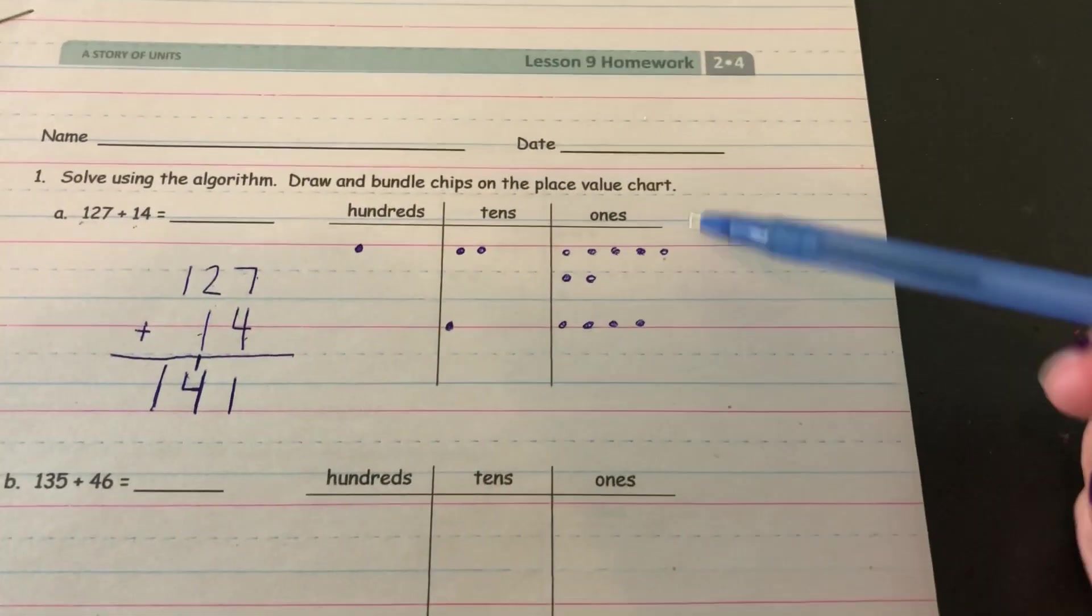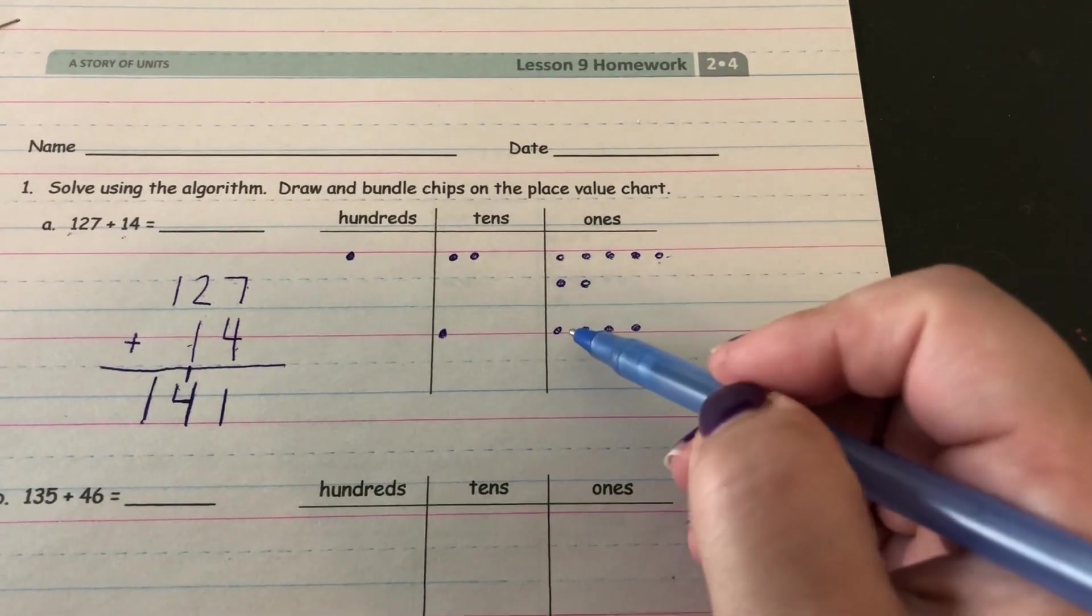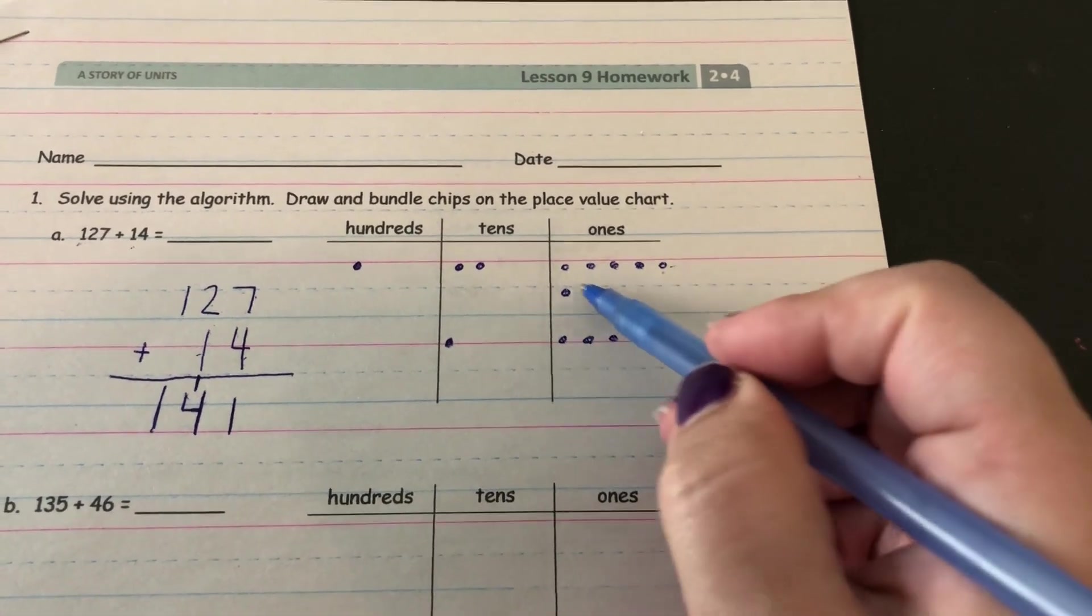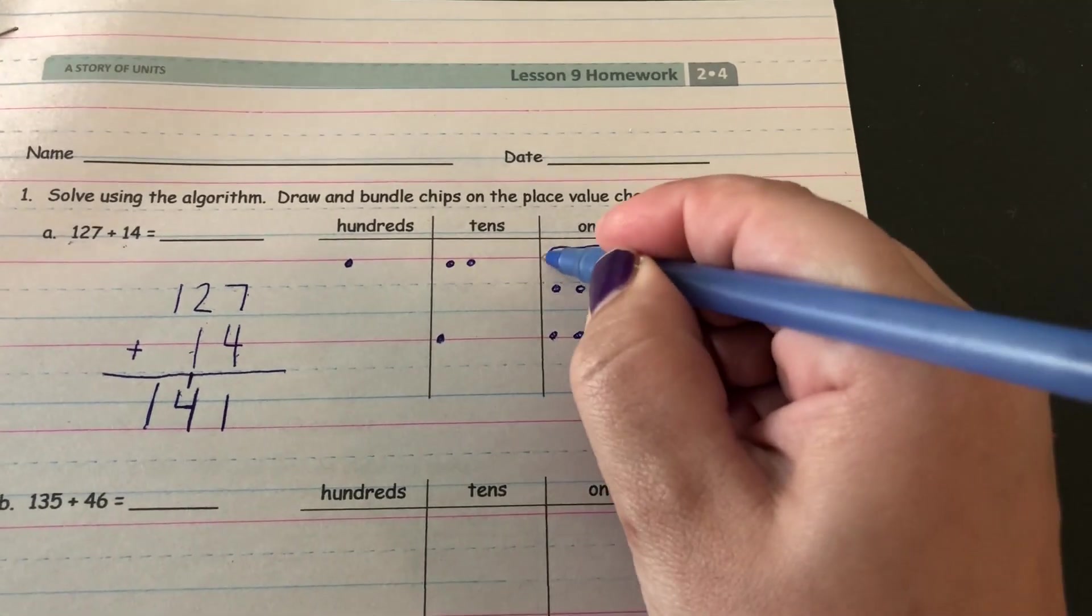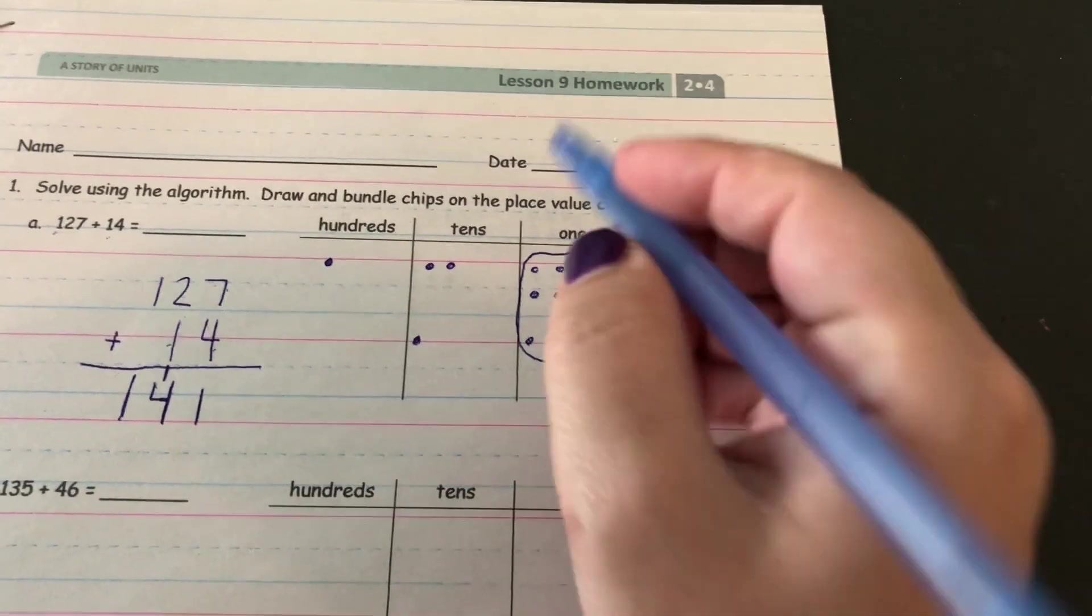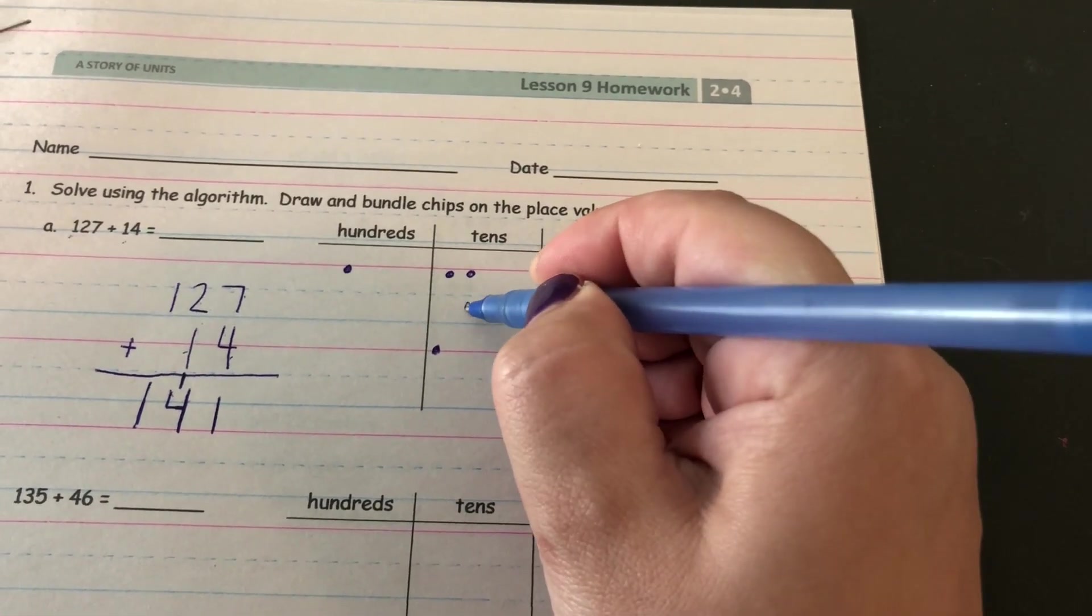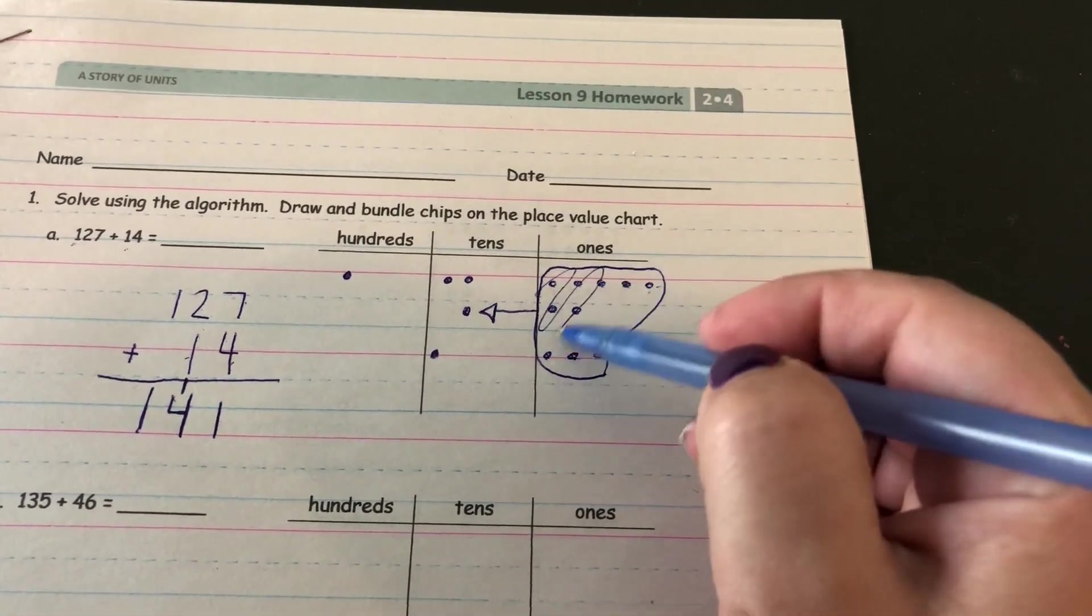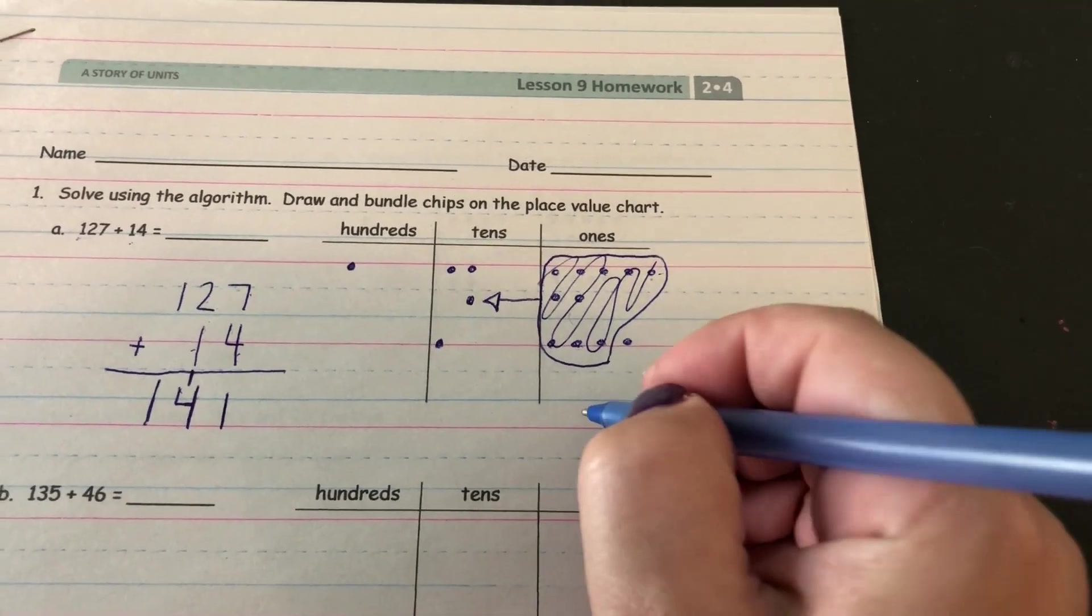Always start in your ones place. So if I have seven I have eight, nine, ten. And now I have a bundle of ten. I know that ten ones is the same thing as one ten so I'm going to change it. And now I no longer have these ten ones because I just changed it into one ten. I'm left with one one left over.